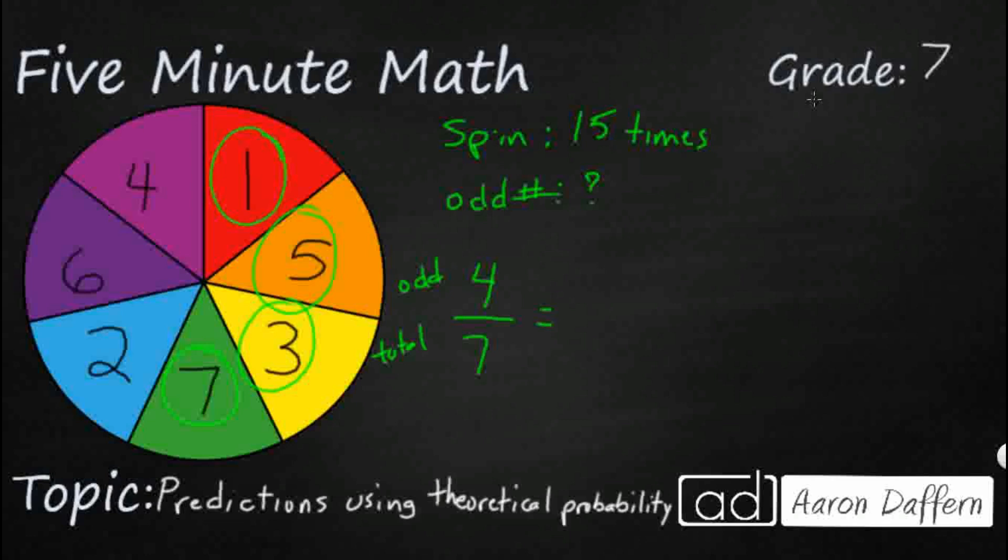And so if I spin this 15 times, what I need to do is find a third number, because if I do that, I can go ahead and make this a proportion. And so if I were to spin this, I want to see how many total options are if I spin it 15 times. So that is going to be 105.